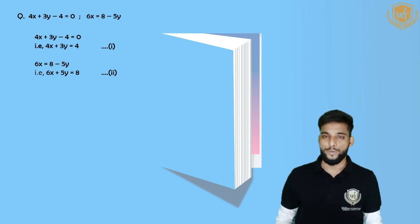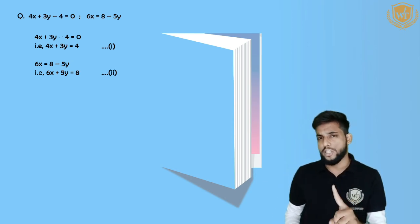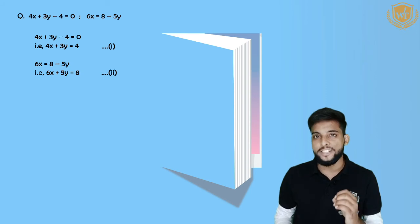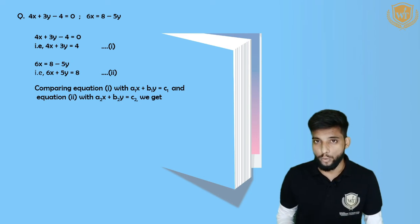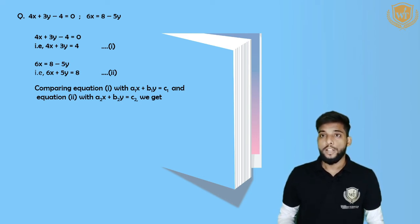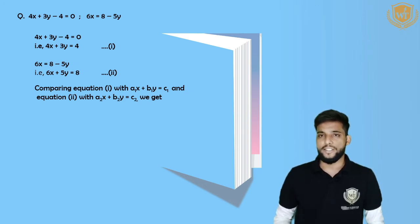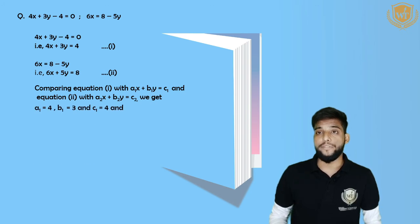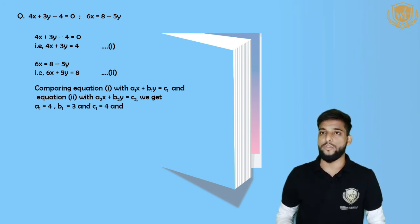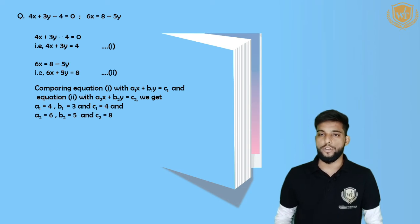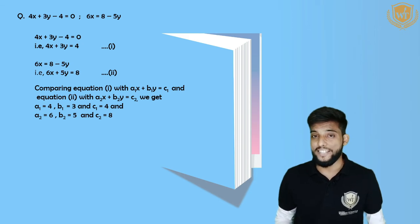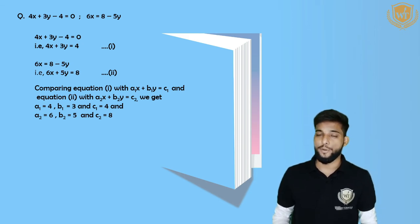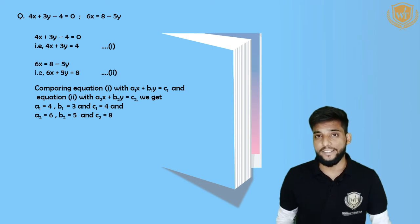Step three: compare equation one with A1X plus B1Y equals C1 and equation two with A2X plus B2Y equals C2. From equation one: A1 equals 4, B1 equals 3, C1 equals 4. From equation two: A2 equals 6, B2 equals 5, C2 equals 8. Step three is done.